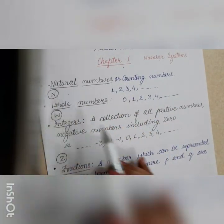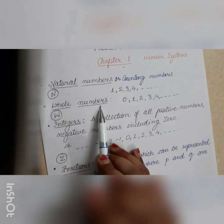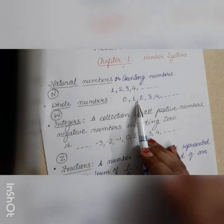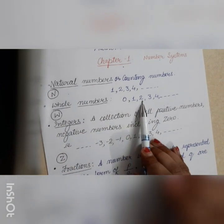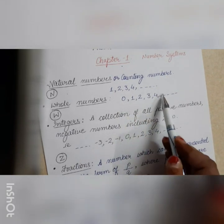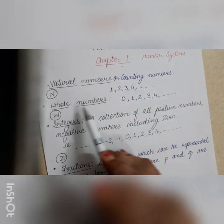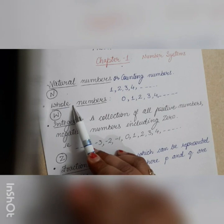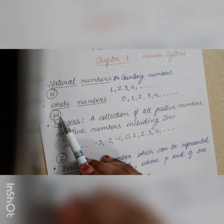Next are whole numbers. Whole numbers include zero, one, two, three, four. We can say a collection of natural numbers along with zero gives you whole numbers, which is represented by the letter W.